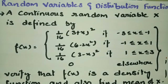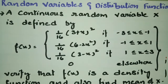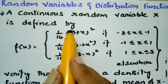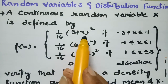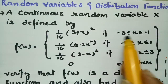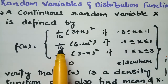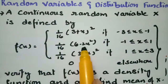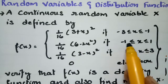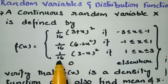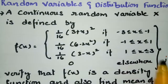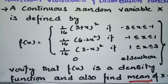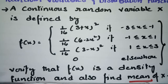This problem is from random variables and distribution functions. A continuous random variable x is defined by f(x) = (1/16)(3 + x)² if x lies between -3 and -1, and (1/16)(6 - 2x²) if x lies between -1 and 1, and (1/16)(3 - x)² if x lies between 1 and 3. We have to verify that f(x) is a density function and also find the mean of x.